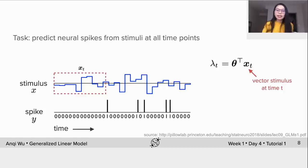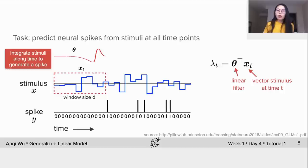The size of the window is d. θ is called linear filter. Here is how it would look like: it integrates stimulus along time within the window to generate a spike. λₜ is the continuous firing rate value at time t. This expression can be expanded as the sum of θᵢ multiplying Xₜ₋ᵢ within the window. The spike count yₜ at time t is the firing rate λₜ plus the Gaussian noise ηₜ.